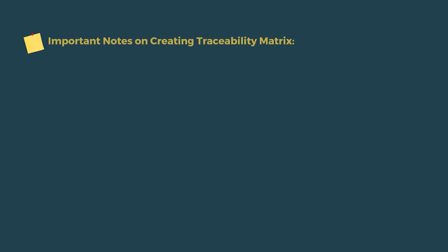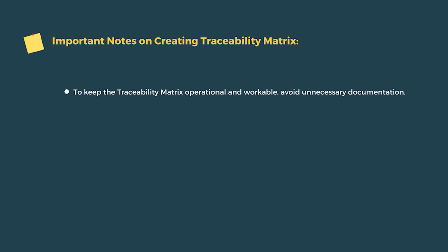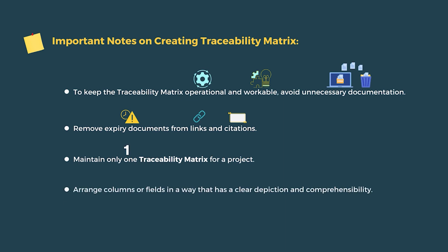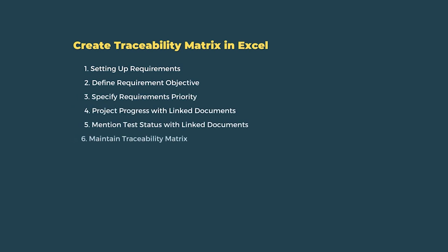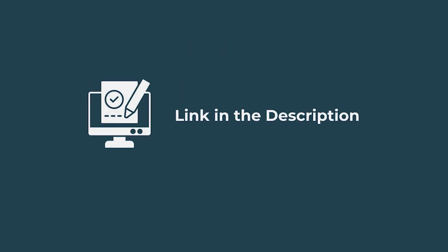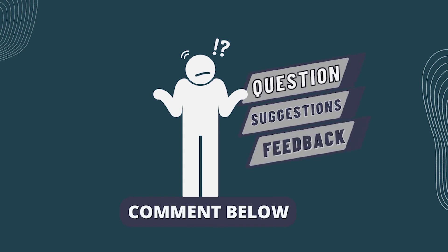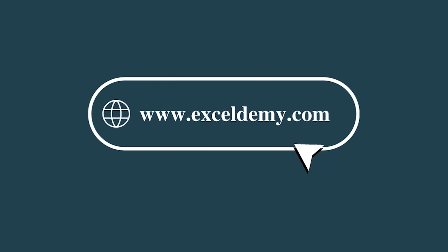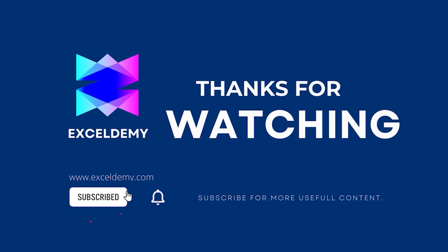Here are some important notes about creating a traceability matrix. Keep the matrix operational and workable, and avoid unnecessary documentation. Remove expired documents from links and citations. Maintain only one traceability matrix per project, and arrange columns and fields so they have a clear description and comprehensibility. You can follow these steps or download the practice workbook from the link below. If you have any questions, suggestions, or feedback, please let us know in the comment section or visit xlm.com. Thanks for watching — please consider subscribing for more content like this.